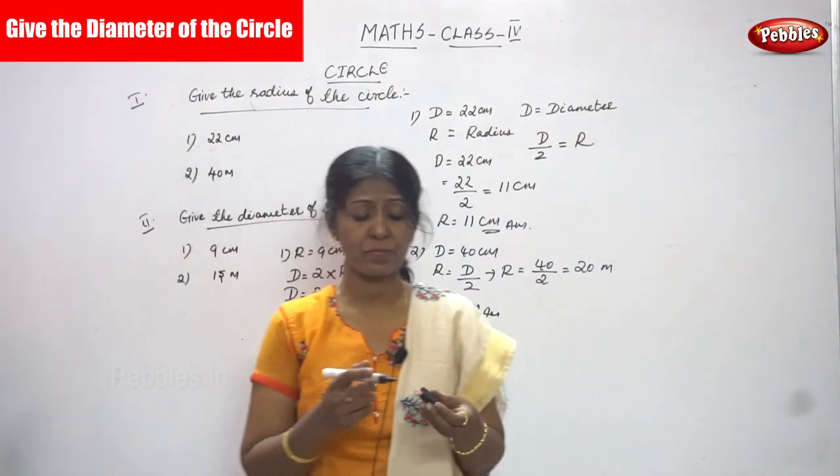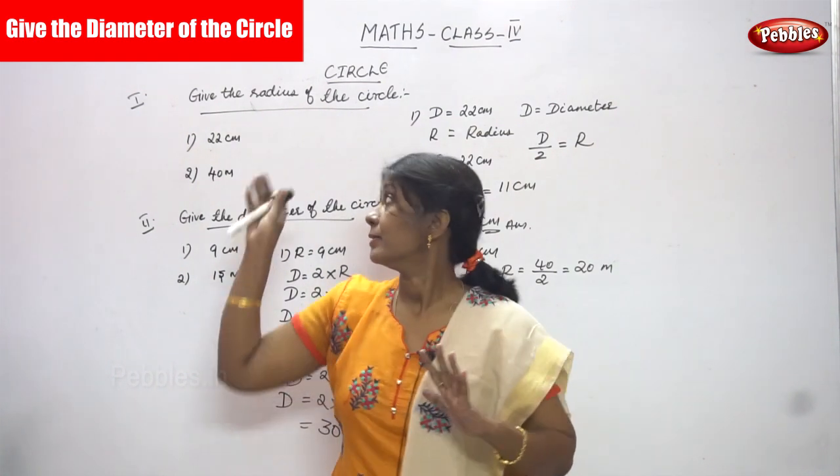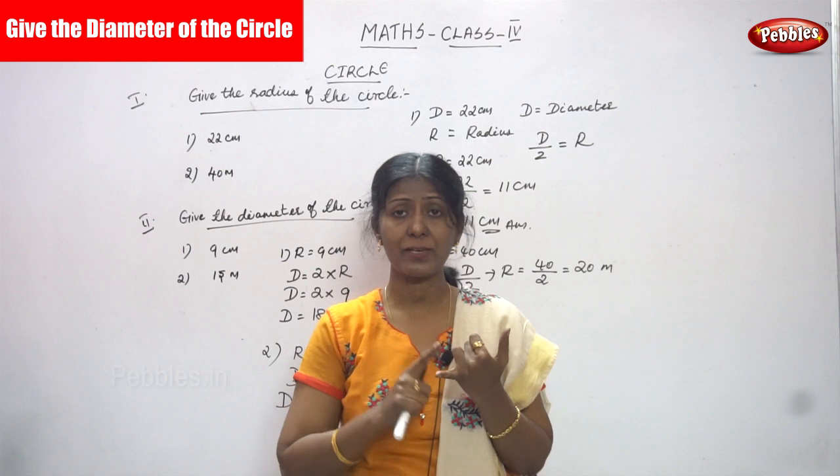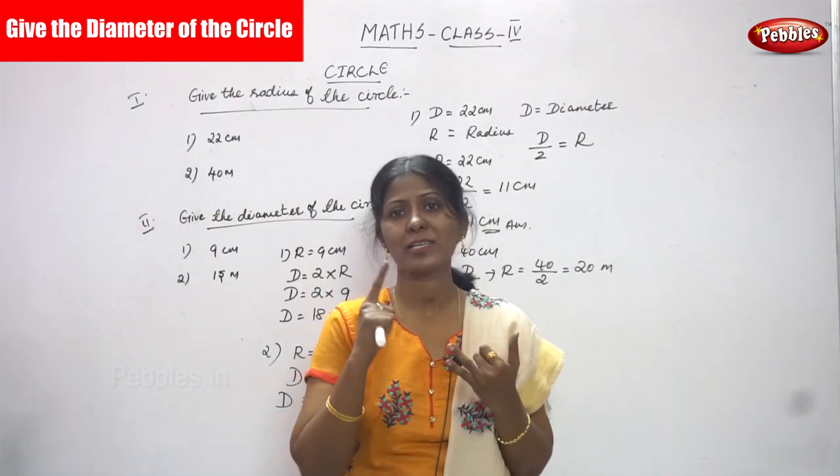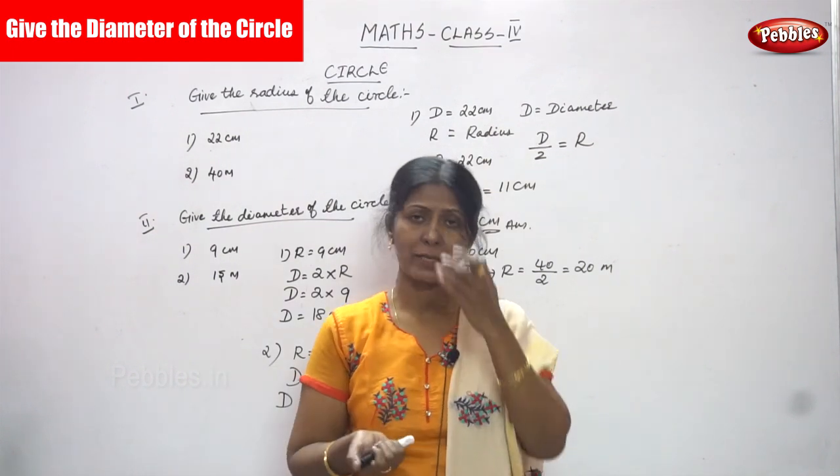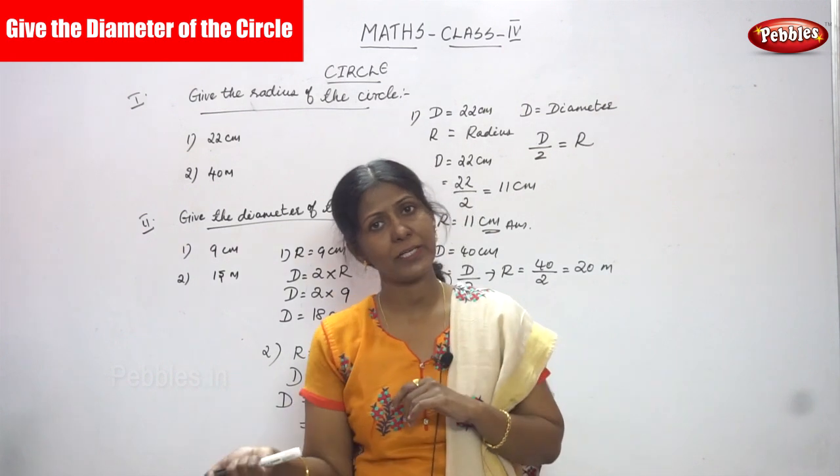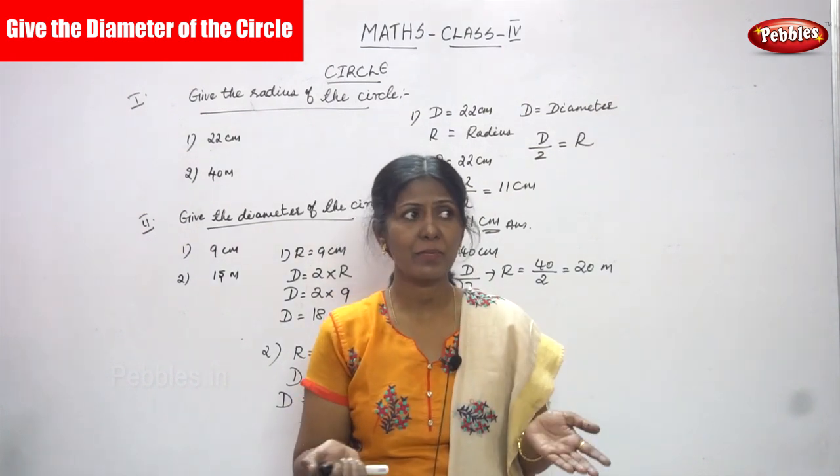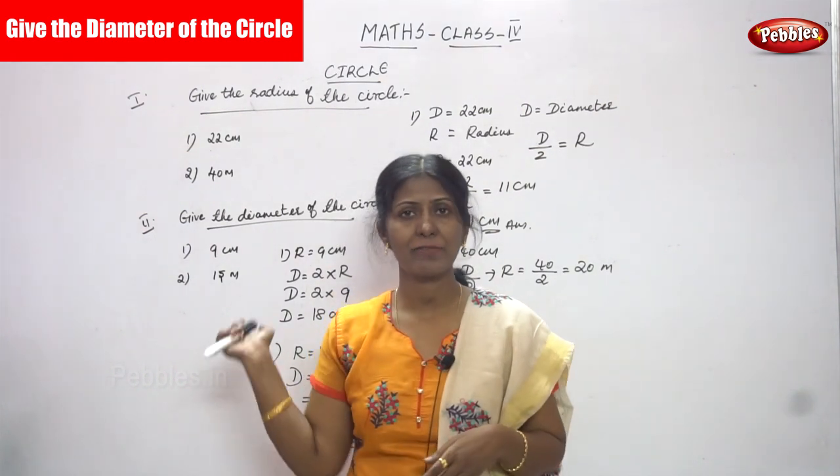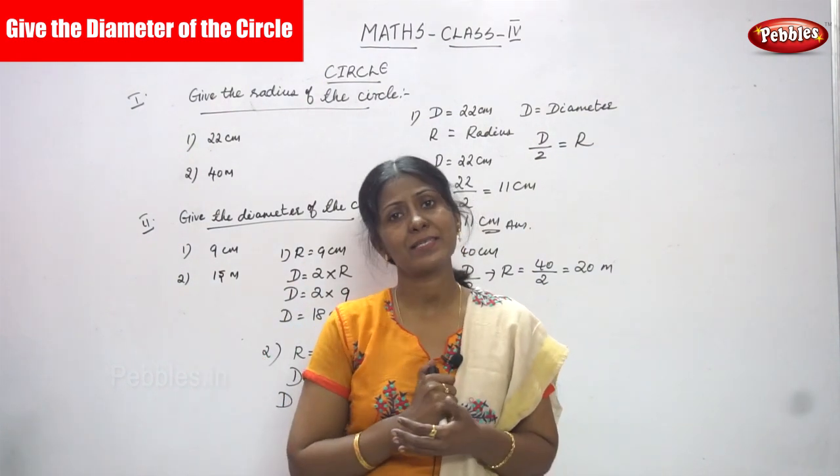I think you understand the concept of circles and also the parts of a circle. Now we have seen what is a circle and what are the parts of circle, the diameter and the radius. So they give radius, then you have to find out diameter. Then they give diameter and you have to find out radius. So you have done all the problems in the circles. I think you understand the circle very well.